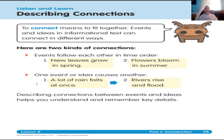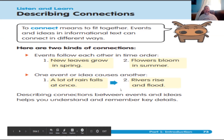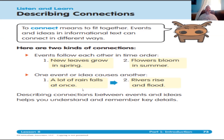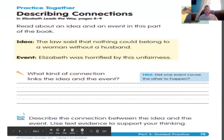The second type of connection is cause and effect — one event or idea causing another. Because one thing happened, something else happened after that. For example: a lot of rain falls at once, so rivers rise and flood. Because the rain fell, the rivers flooded. Describing connections between events and ideas helps us understand and remember key details in a story.